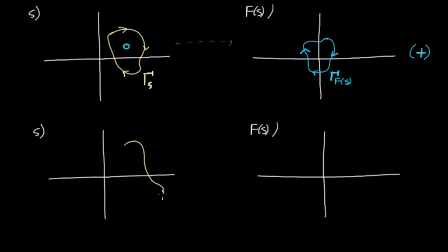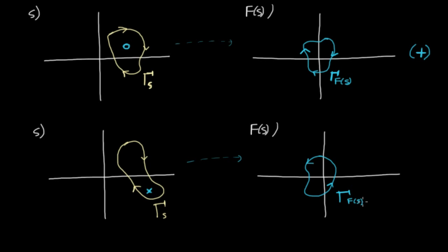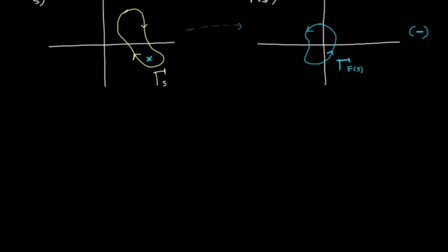Similarly, if what the input trajectory encompasses is a pole of f, then the image trajectory will also encircle the origin, but this time in the opposite direction. In this case, we talk about a negative encirclement.